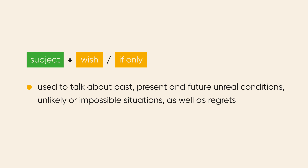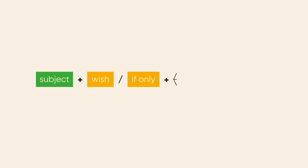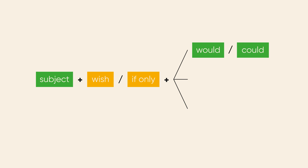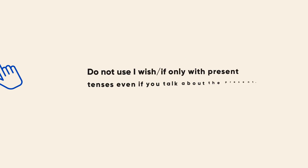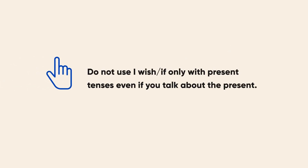Depending on the context, we use subject plus wish and if only in constructions with would, could, was, were or past tenses. We do not use I wish or if only with present tenses, even if we talk about present situations.